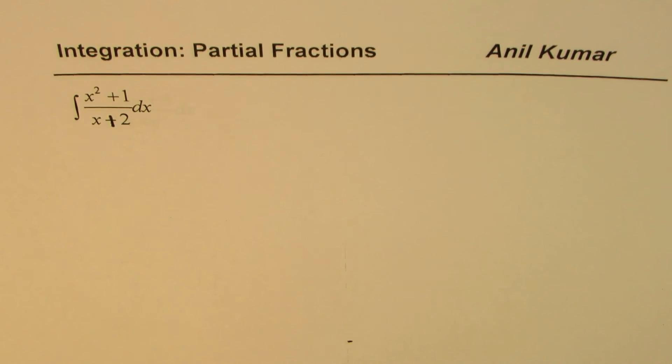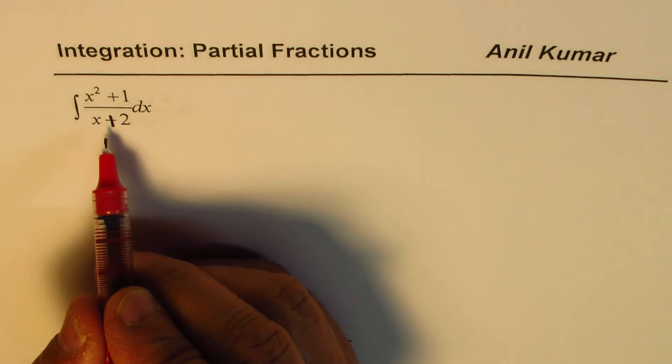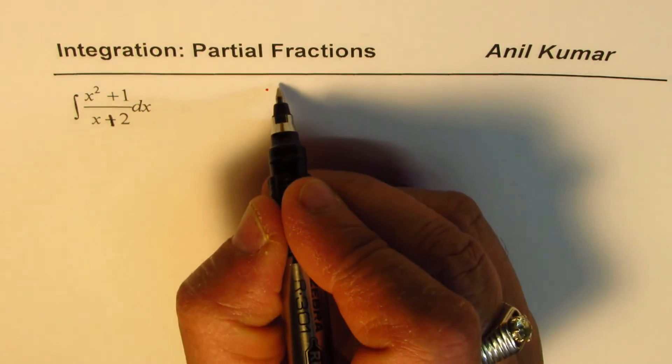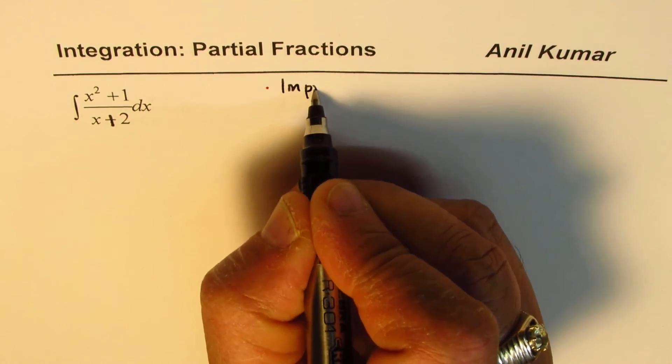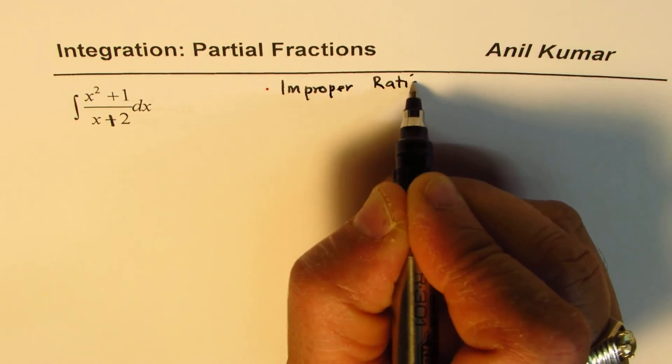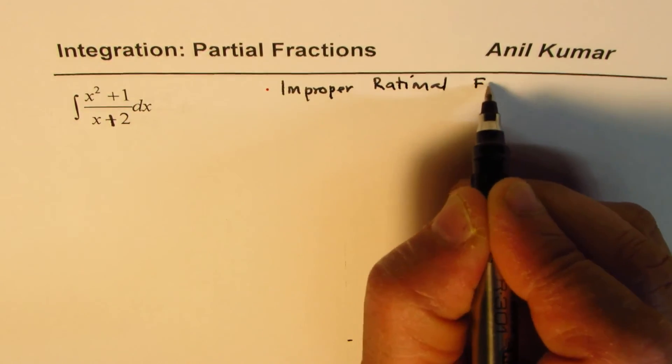I'd like you to pause the video, answer the question, and then look into my suggestions. Now what you observe here is a couple of things. One, it is an improper rational function. So we say this is improper rational function.